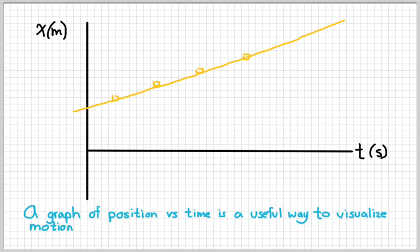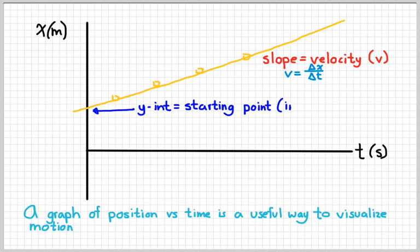When we graphed our data, we ended up getting something kind of like that, where the rate of change would be equal to the slope, which we now call the velocity. And the starting position, starting point, can be found from the y-intercept. The fancy physics term that we would use would be the initial position, and we give that the symbol x with a subscript zero, which sometimes we read as x naught. That stands for the initial position or the starting point. Again, that's something that's kind of chosen by the observer.